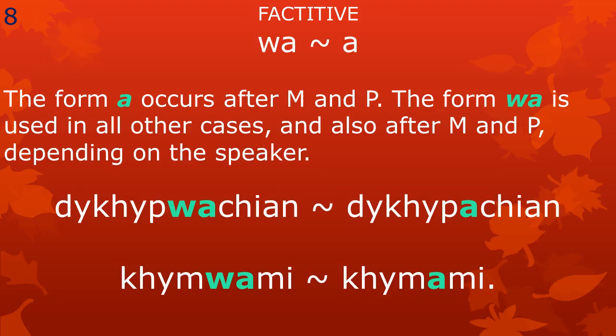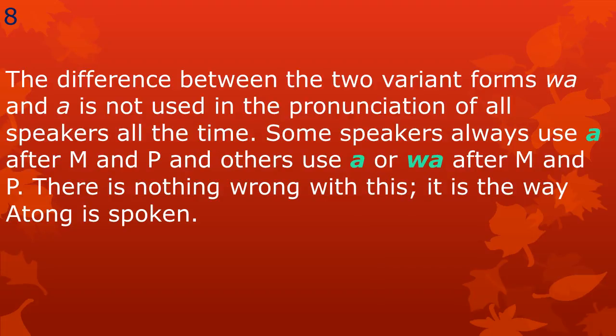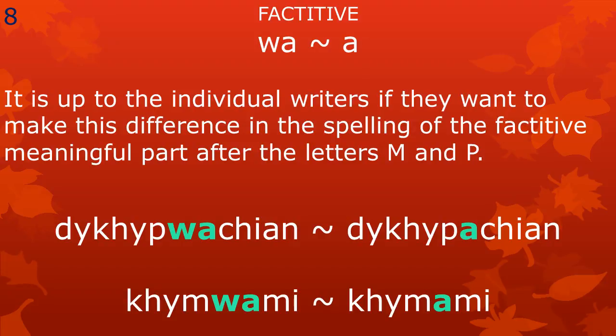The factative meaningful part has two variant forms: wa and a. The form a may be used when the factative comes after the letters ma or pa. The form wa is used in all other cases, and may also be used after the letters ma or pa, depending on the speaker. Some people will prefer to say dkpwachian, while others may say dkpachian. Some people may say khmwami, while others may prefer khmami. The difference between the two variant forms wa and a is not used in the pronunciation of all speakers all the time. It is up to the individual writers if they want to make this difference in the spelling of the factative meaningful part after the letters ma and pa.